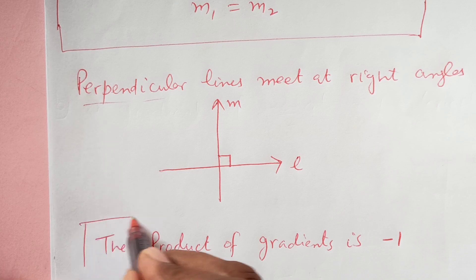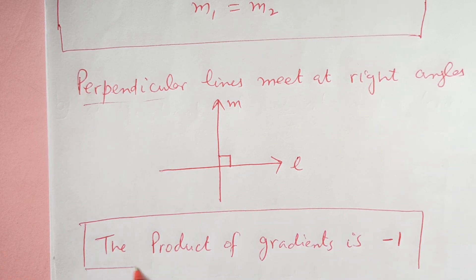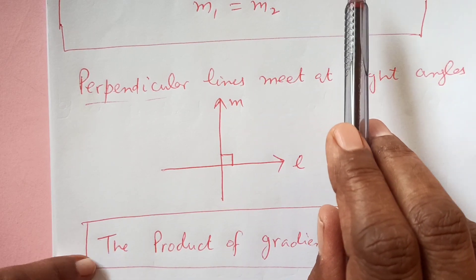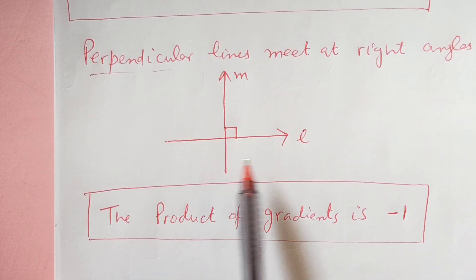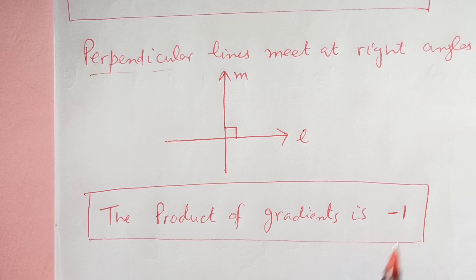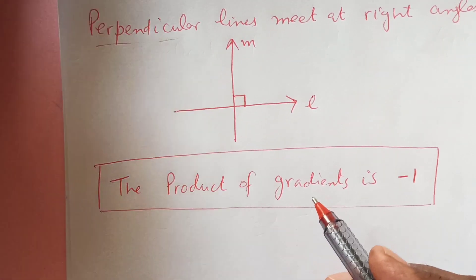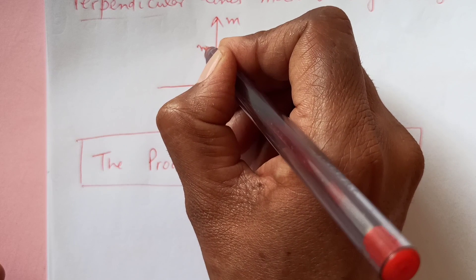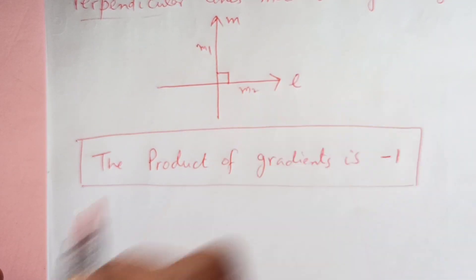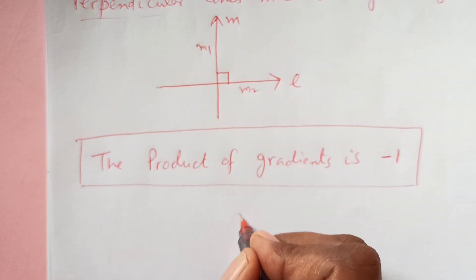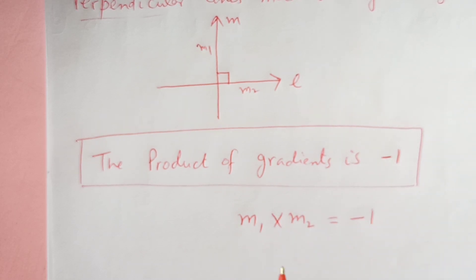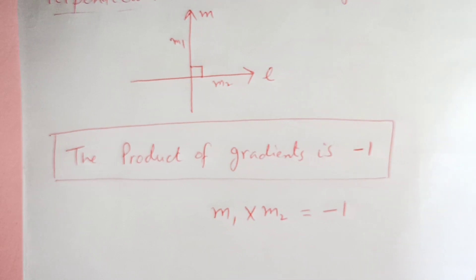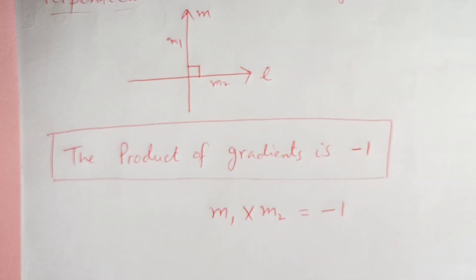These are the two things you need to remember: when lines are parallel, gradients are equal; and when lines are perpendicular, the product of the gradients is negative 1. So if M1 is the gradient of one line and M2 is the gradient of the other line, then M1 times M2 is going to be negative 1. So if you know the gradient of one line, you can easily find the gradient of the second line.